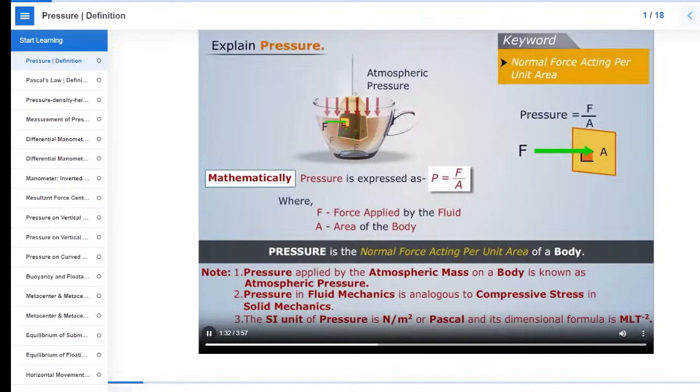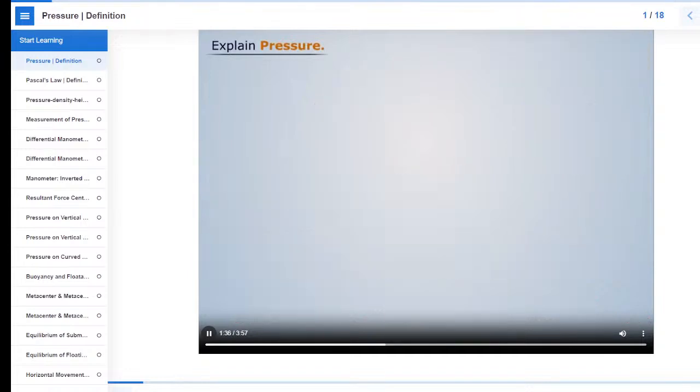And its dimensional formula is MLT to the power minus 2. Now let's understand the pressure measurement systems.